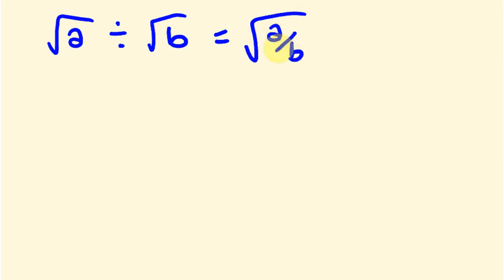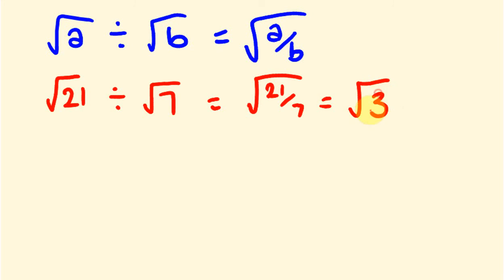So an example of this could be as follows. So say we did something like the square root of 21 divided by the square root of 7. Something nice and easy. And the answer to this would be, because we actually substituted this in, that would be the square root of 21 divided by 7, which would be equal to the square root of 3. And that's how we divide surds. It's fairly simple.